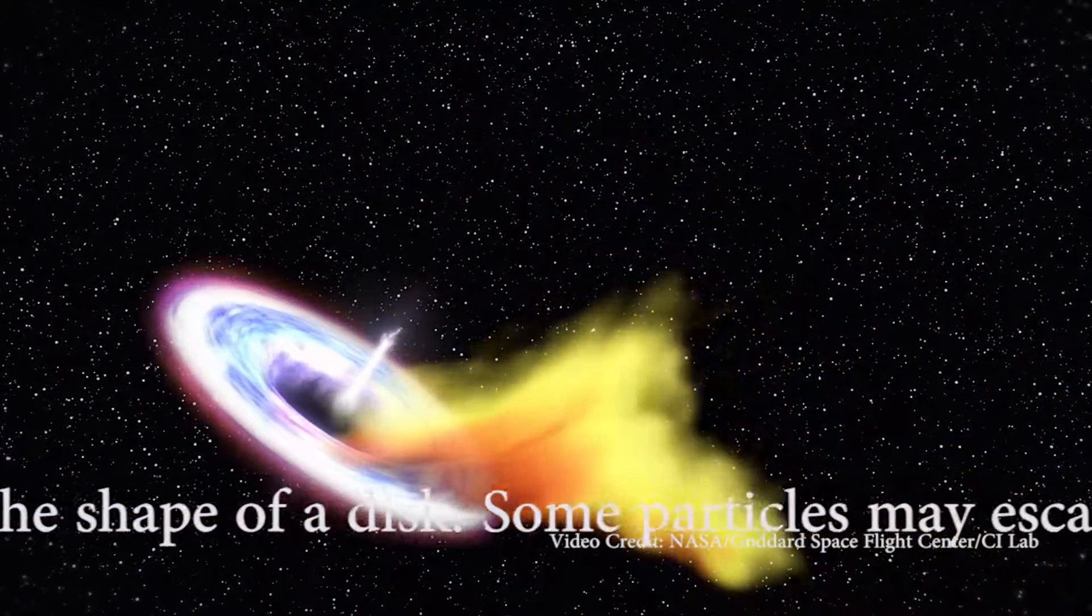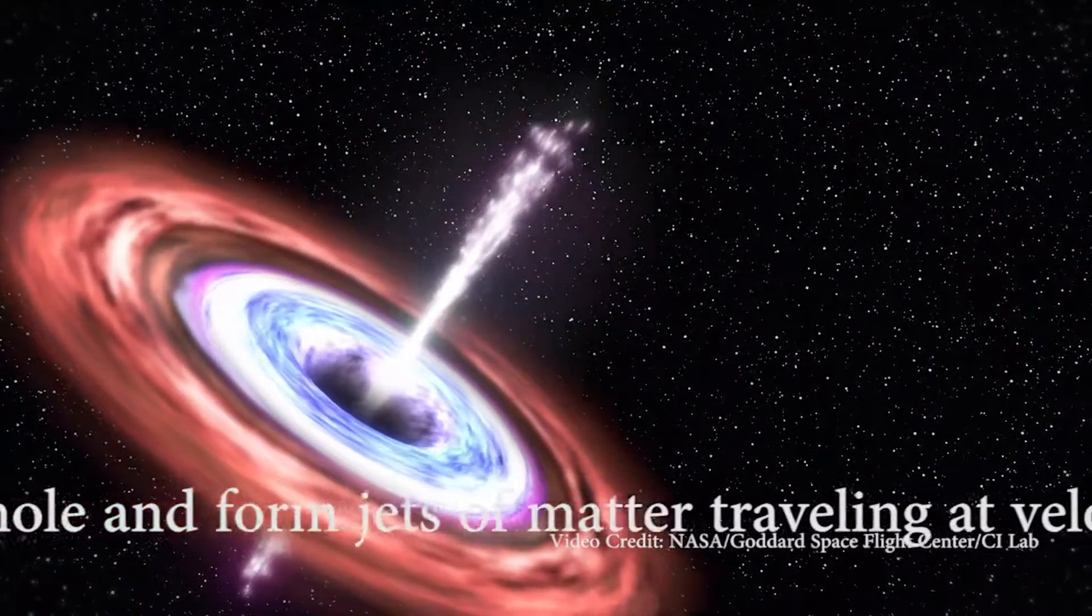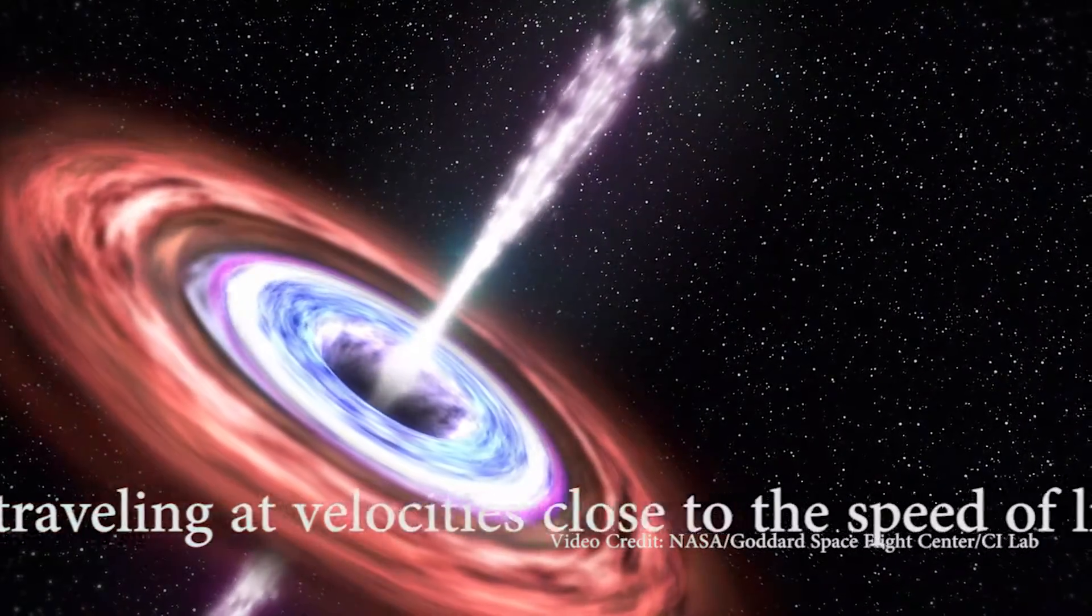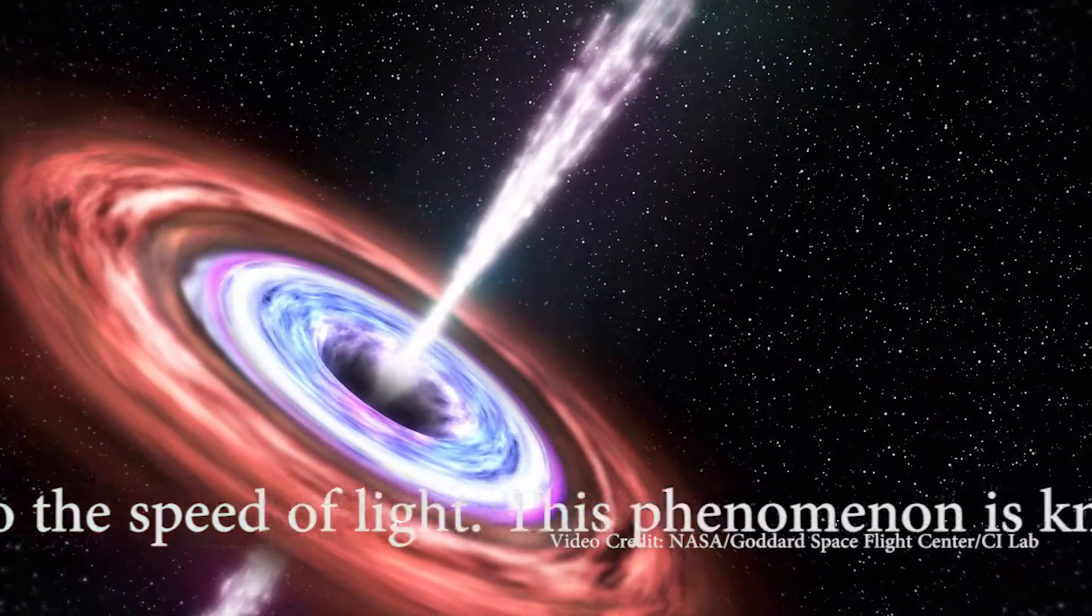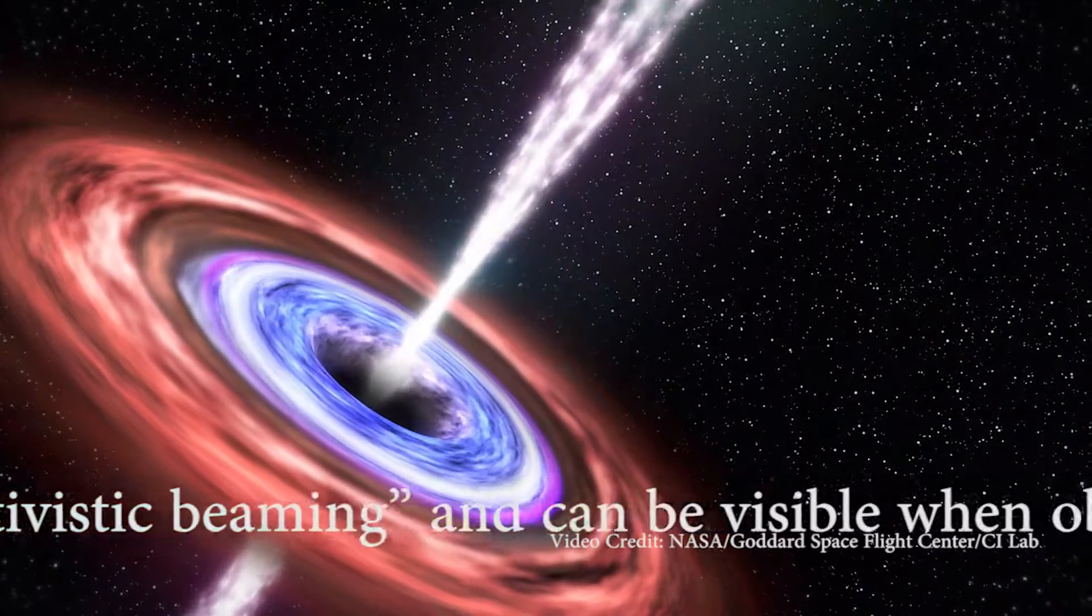Some particles may escape the black hole and form jets of matter traveling at velocities close to the speed of light. This phenomenon is known as relativistic beaming, and can be visible when observed in the X-ray energy spectrum.